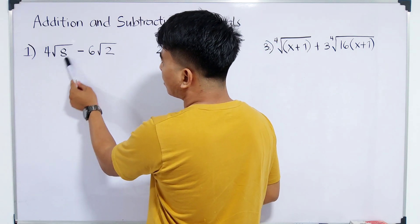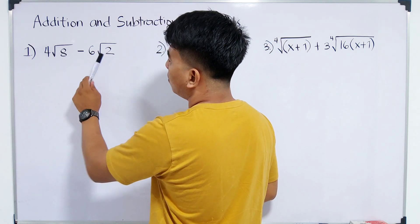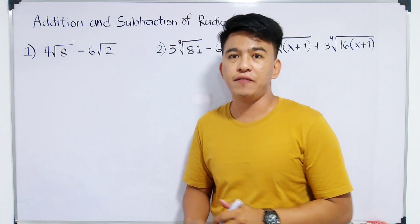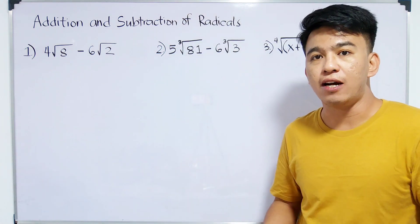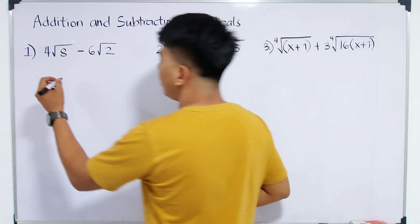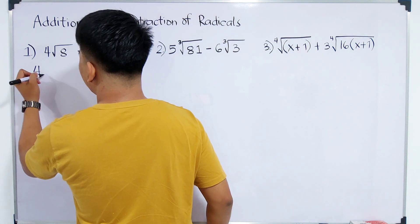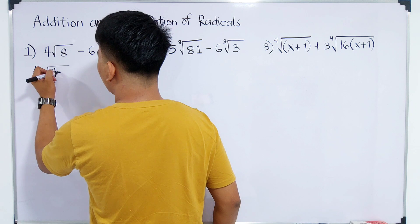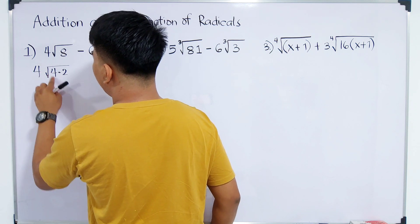So what we need to do here is we will extract the square root of 8. So remember, our 8 is not a perfect square. So we can factor out 8 and it will become 4 times the square root of 4 times 2.